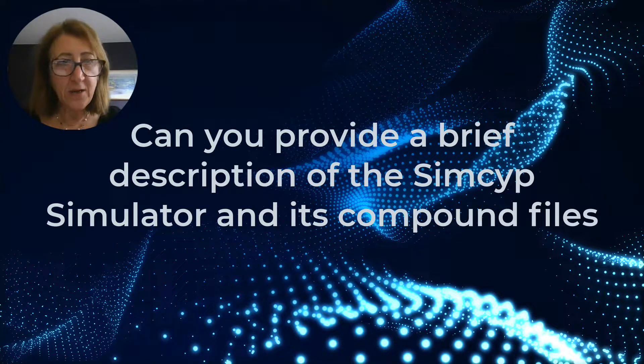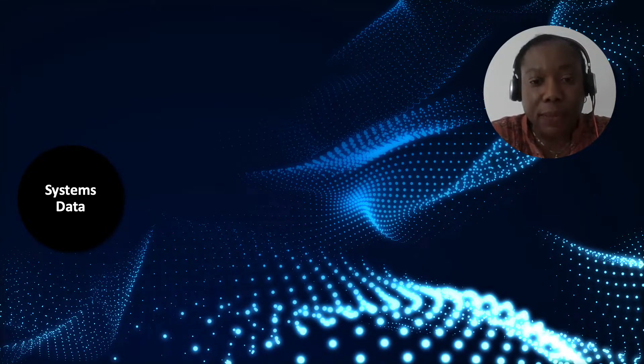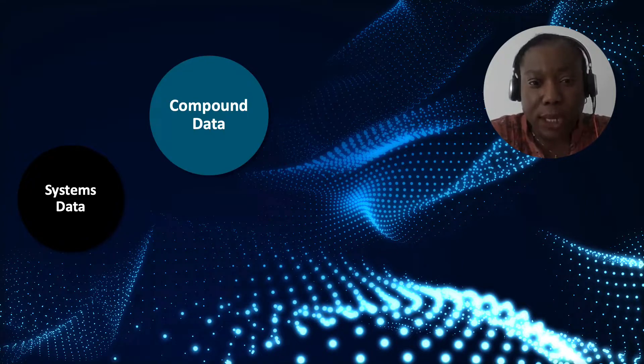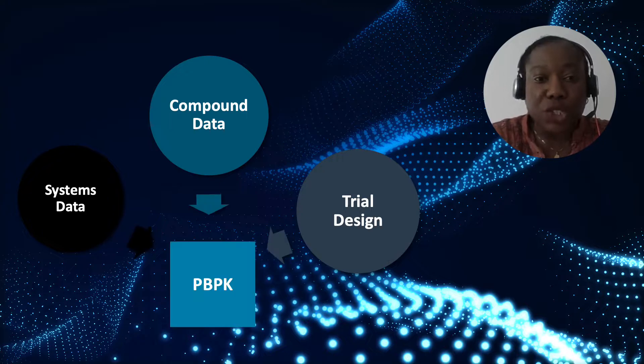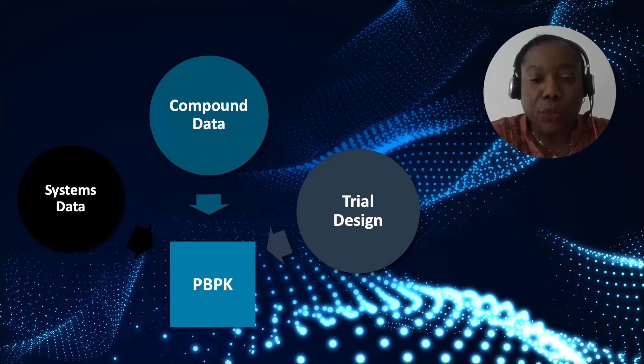Let's begin with a brief description of the SIMSIP simulator and what we mean by compound files. The SIMSIP simulator is divided into three sections: the first is the population, or systems data; the second is the compound file, which is the drug data depending on what drug you're trying to simulate; and the third is the trial design. These three sections are kept separate so you can look at the impact of one upon the other. This paper focuses on the steps to develop a compound file, particularly looking at small molecules, not biologics.